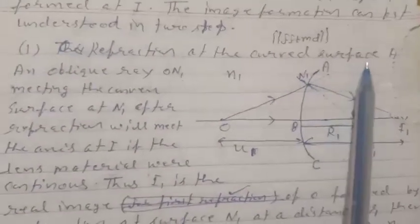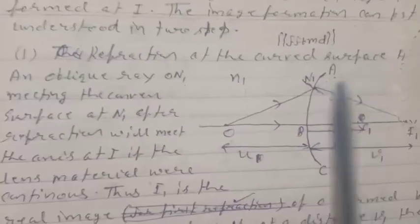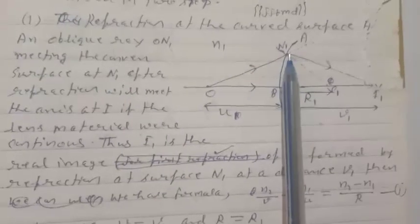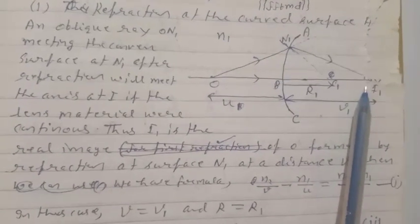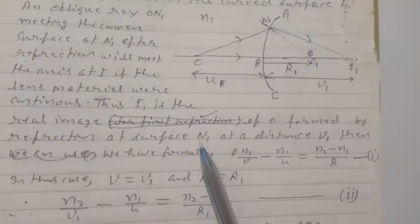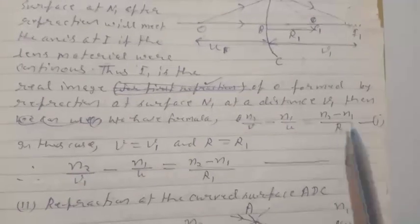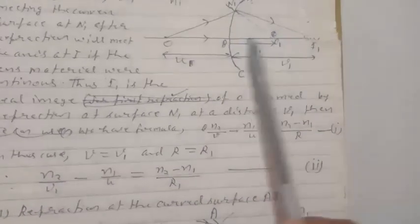Image formation can be understood in two steps. First, refraction at the curved surface ABC: the oblique ray ON1 meets the curved surface at N1, and after refraction meets the axis at i1. If the lens material were to continue, i1 would be the real image of O formed at a distance V1. Using the formula n2/v minus n1/u equals (n2−n1)/R, for this case v equals V1 and R equals R1, giving n2/V1 minus n1/U equals (n2−n1)/R1. This is equation 2.